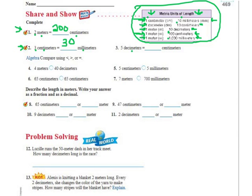Changing decimeters into centimeters — that's right here — I'm going to multiply by 10. Five times 10 is 50.